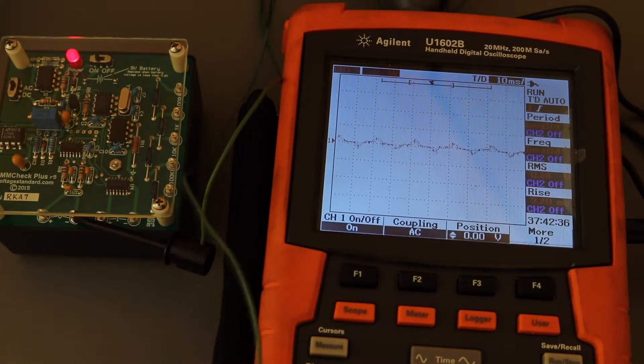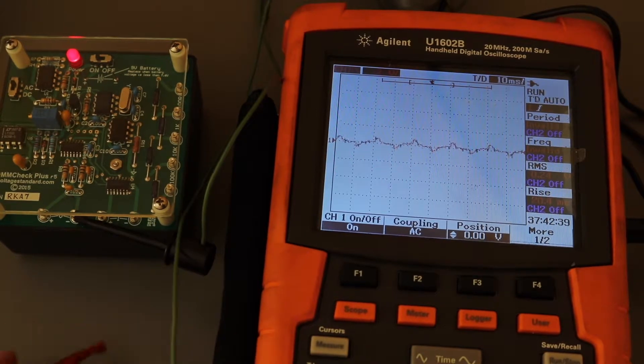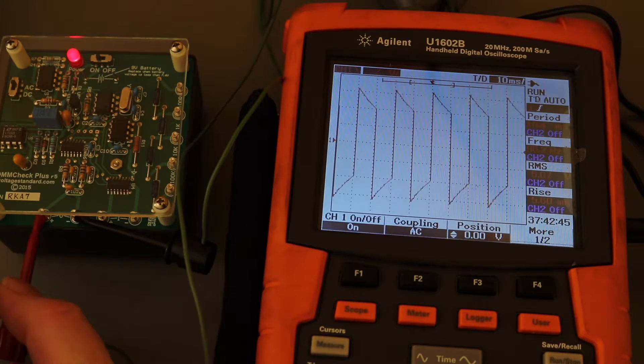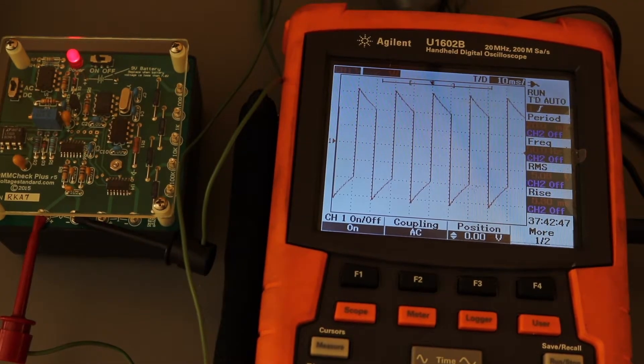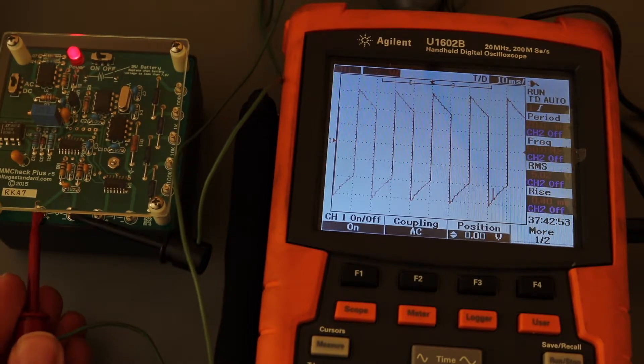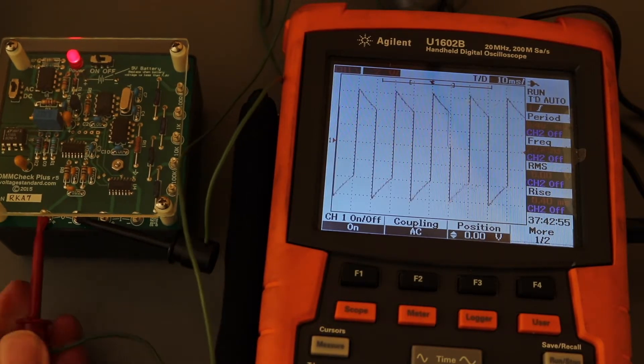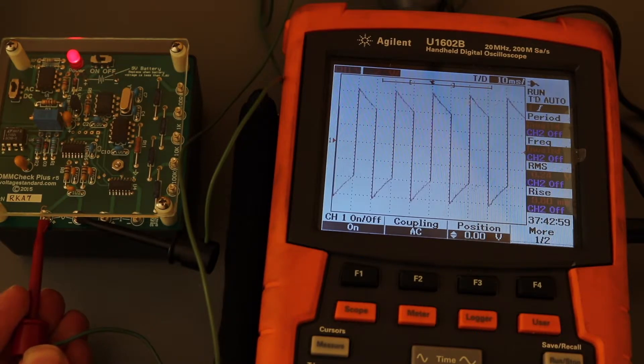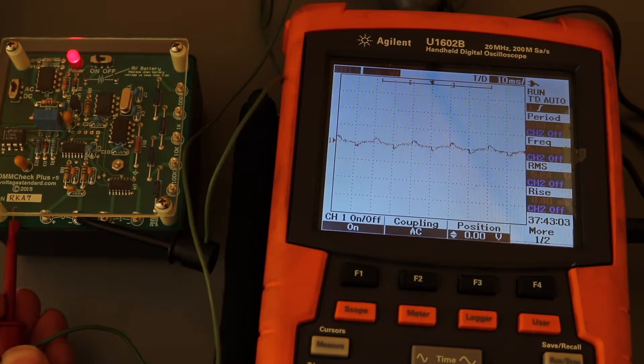A little demo of the scope on the output of the DMM check plus. That's the AC output on this unit. Off again, on again, off again, on again. So you see the reaction time is quite good.